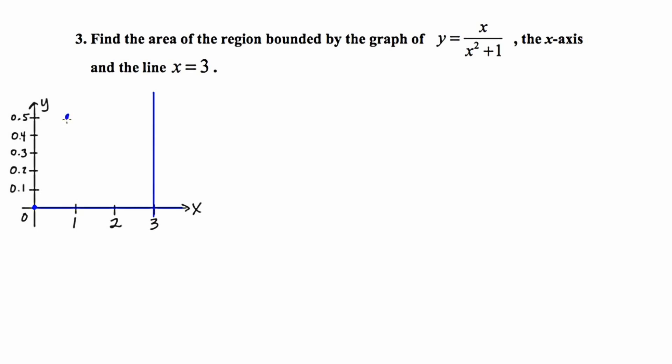If I plug in 2 for x, I'm going to get 2 over 5, which is 2 fifths or 0.4. And if I plug in 3 for x, I get 3 over 10, which is 3 tenths or 0.3. So if I were going to sketch this, the graph goes up abruptly like this. And then it comes down like that. And what I'm trying to find is the area of this region right here.